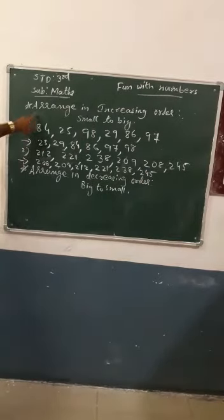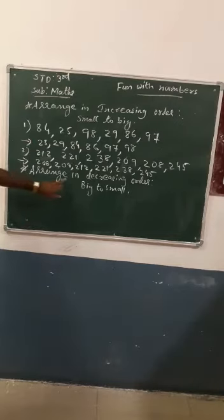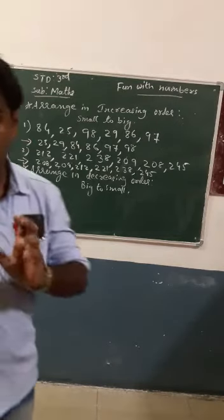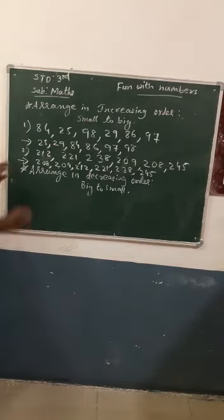This is the method to arrange in increasing order, small to big. And next is arrange in decreasing order. Decreasing means big to small numbers. Suppose for example,